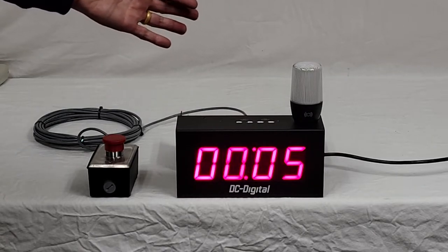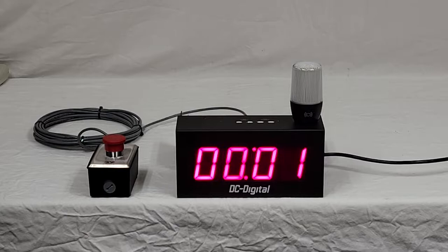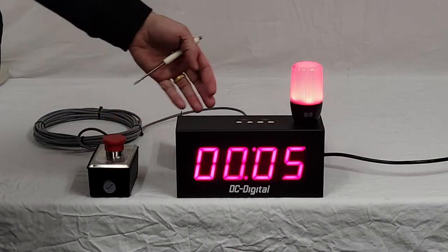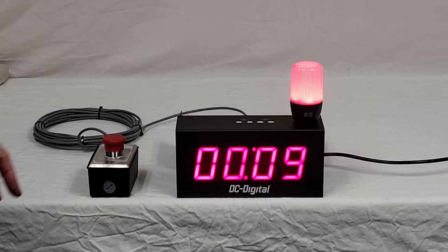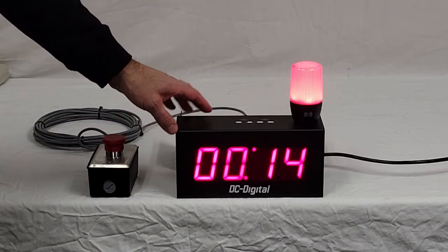it turns on an andon light, as you'll see here in a few seconds. You have several colors to choose from; this customer wanted red. Then it immediately starts counting back up again. This is a 2.3-inch high digit, four-digit LED display.